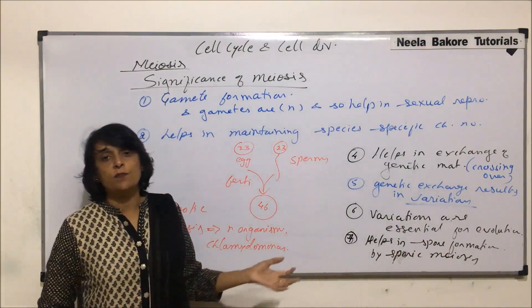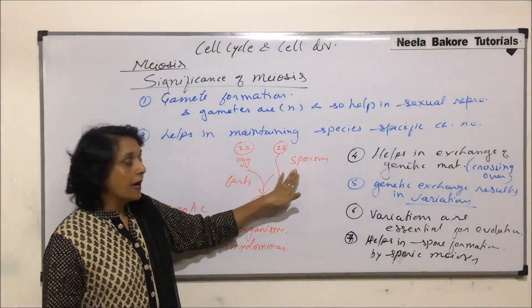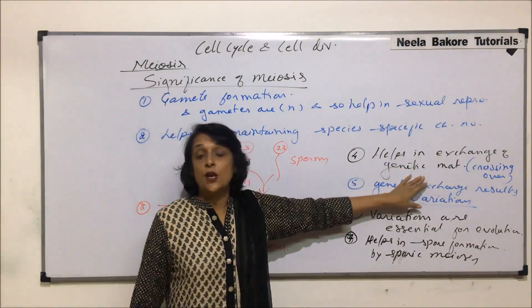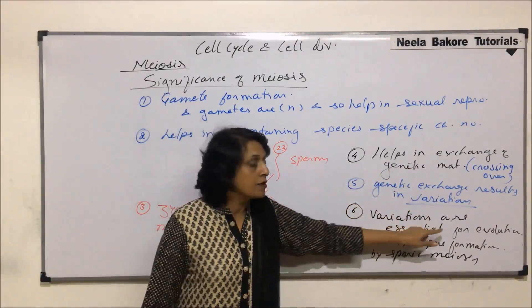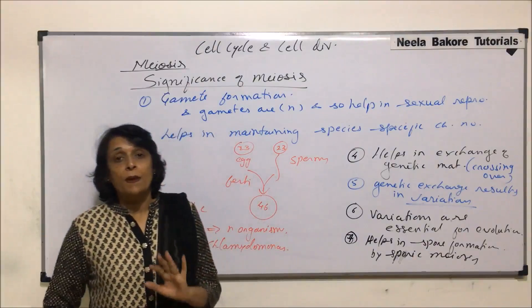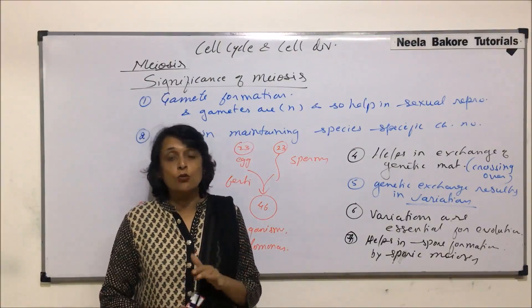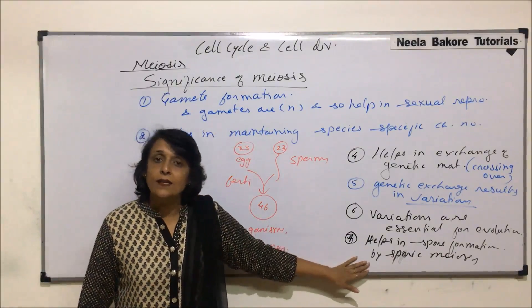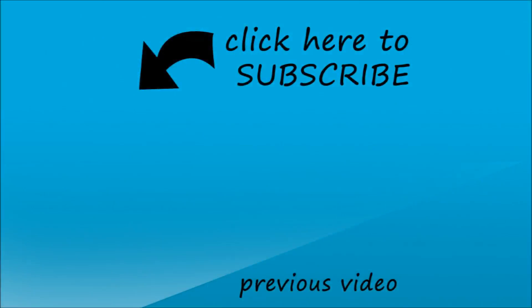So all three types of meiosis play important roles. The most important thing is gamete formation with exchange of genetic material, which causes variations among the population, and these variations help in evolution. Meiosis is a very important division when it comes to sexual reproduction, apart from certain organisms where it also participates in asexual processes.